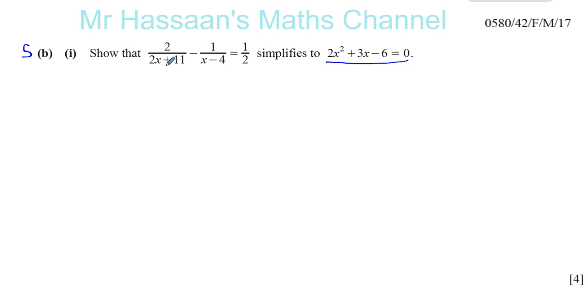So if you have two denominators here, to find the common denominator, you could say you can just multiply them together, especially when you've got algebra. So you're going to have 2x plus 11 multiplied by, so you put it in brackets, multiplied by x minus 4...